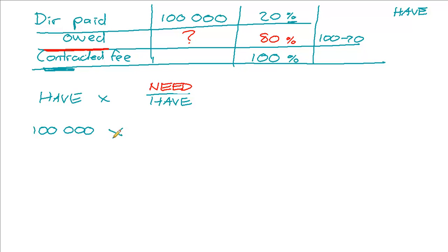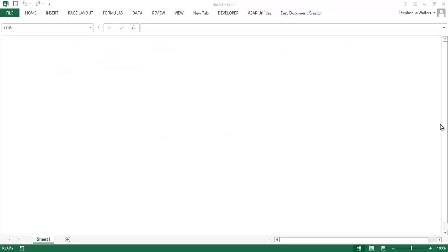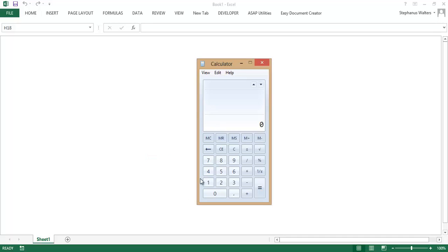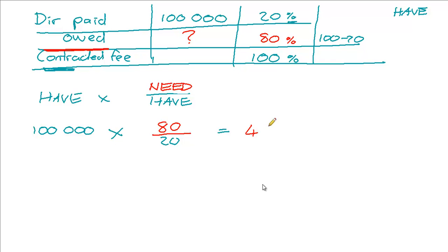We take our 100,000 Rand from the actual figures, then go to our ratio and take the ratio that we need, which is 80, divided by the ratio that we have, which is 20. So we multiply by 80 and divide by 20. Calculating that: 100,000 × 80 ÷ 20 = 400,000 Rand. That is the director's fees owed to the directors.